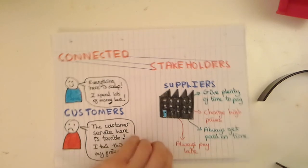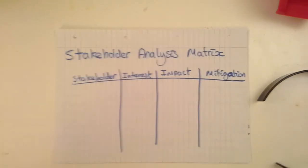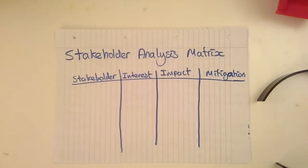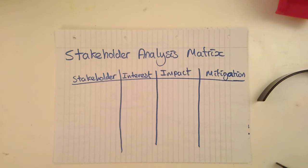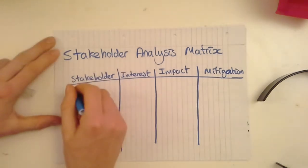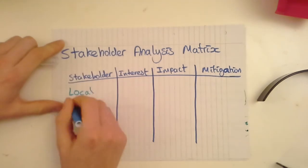A really useful way of looking at stakeholders is something called a stakeholder analysis matrix. It's basically a table looking at stakeholders, and it's really useful for looking at projects. We're going to look at building a sports stadium or sports area on a local university campus, and the stakeholder we're going to look at is the local community — people who live nearby.